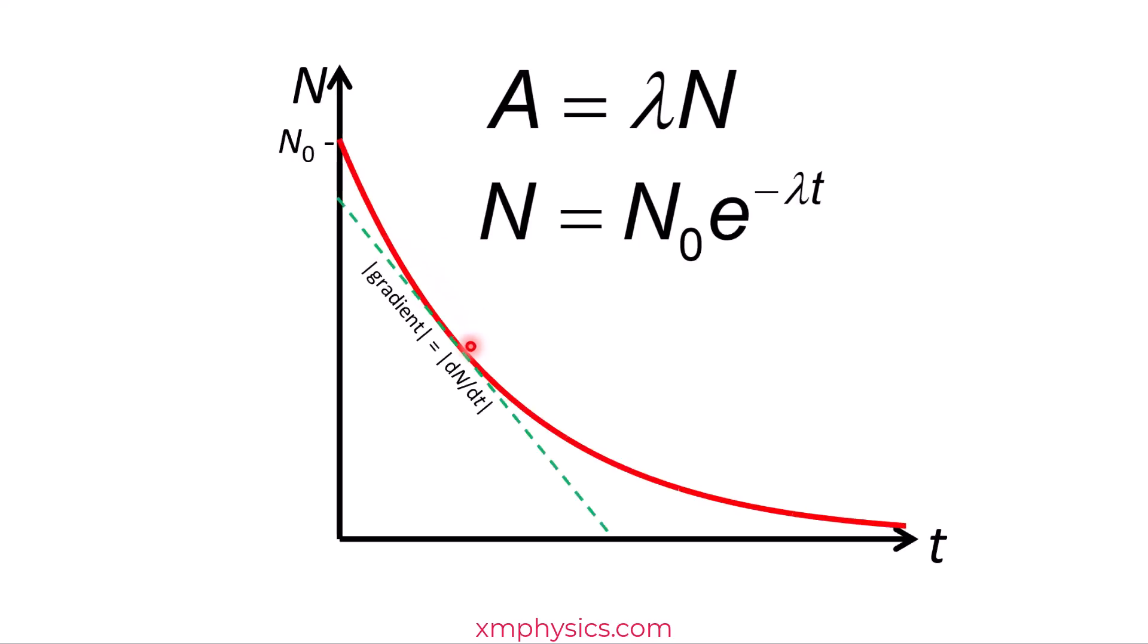The gradients of this graph is of course dN/dt. But what is dN/dt? Isn't it just the activity? So the fact that the gradients of this graph is becoming gentler and gentler tells us that the activity is also decreasing over time. So why is the activity not constant? Well because A is equals to lambda N and N is decreasing over time. As the population decay, the number of undecayed nuclei decreases over time and therefore the activity must also decrease over time.